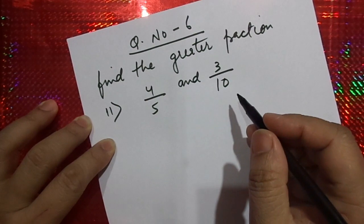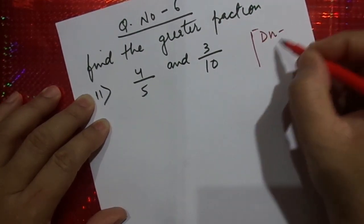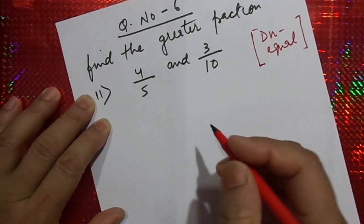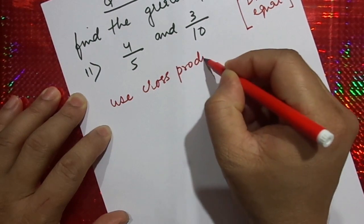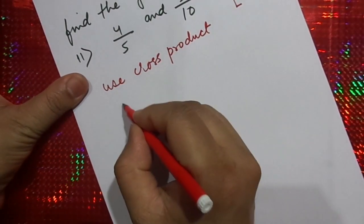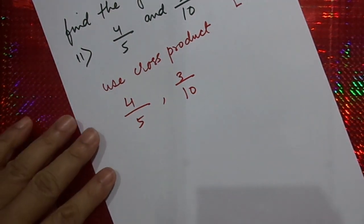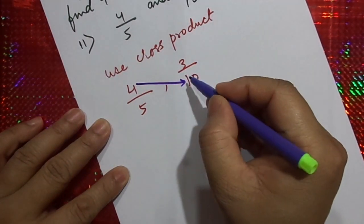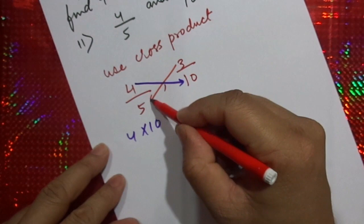One method we can use is by making the denominators equal. If we make denominators equal, then we can know which fraction is bigger. However, I would suggest it is better to use the cross product method. We had also done this in our previous session. If we have 4 by 5 and 3 by 10, we multiply the numerator of one fraction with the denominator of the other. We stick to the rule: 4 into 10 and 3 into 5.